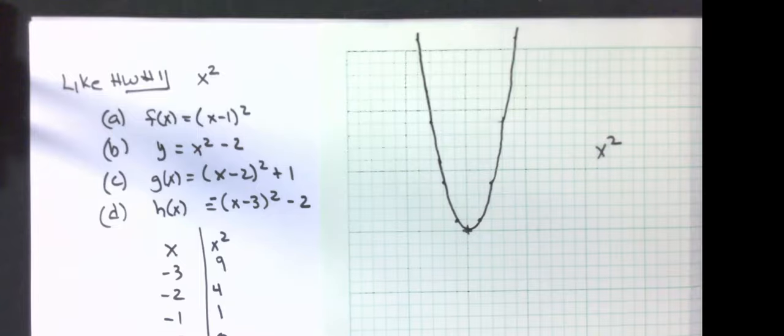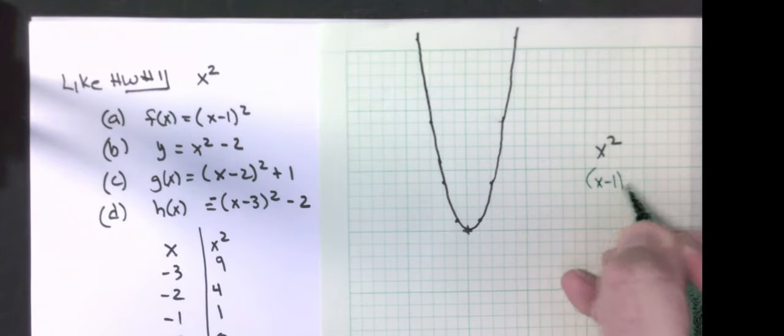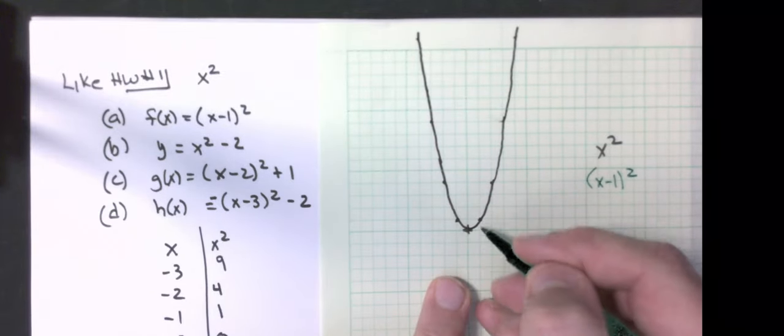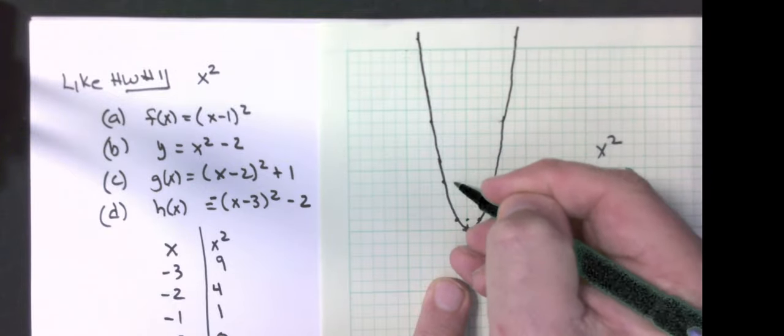The next one I want to do is x minus one squared. This is this graph shifted to the right one. All I'm going to do is go over one, just moving every dot one to the right.